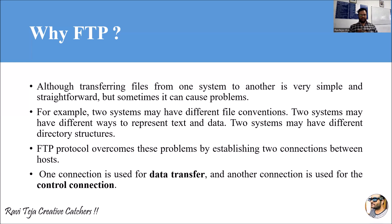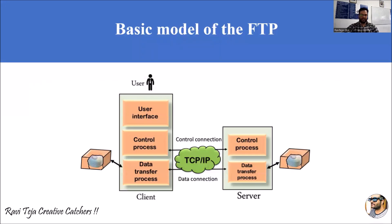Whenever FTP is used, two connections are preferred: one for data transfer and one for control connection. This is a basic model of FTP. As already mentioned, FTP is provided by TCP/IP. Here you can see we have a server as well as a client. The server will have a control process and a data transfer process for communication and data exchange.